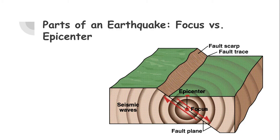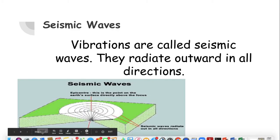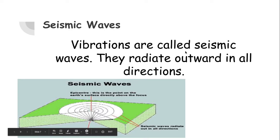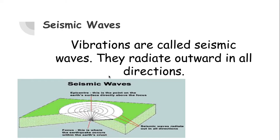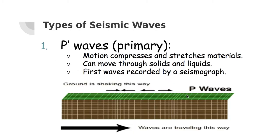When an earthquake happens, it releases vibrations — energy — and we call them seismic waves. Seismic waves circle out in all directions, not only sideways but also down into the earth. Seismic waves are very helpful. If you recall when we looked at layers of the earth, this is how we know what the inside of the earth looks like — we've never been there. We look at how the waves move through the earth, and that gives us a clue as to what it's made of. There are three types of seismic waves, so you can make a chart with three columns.